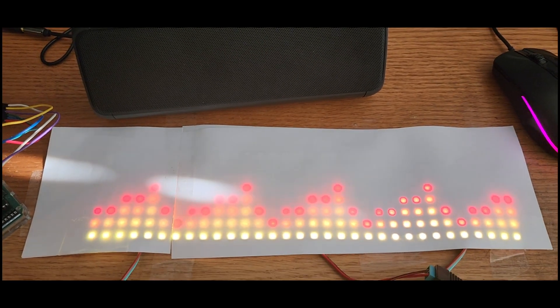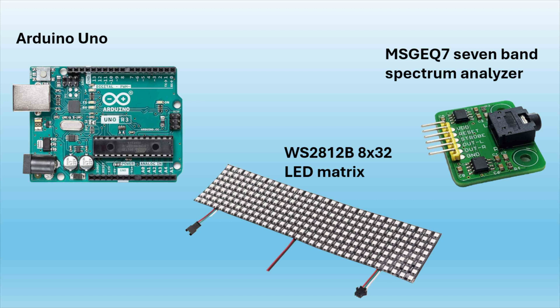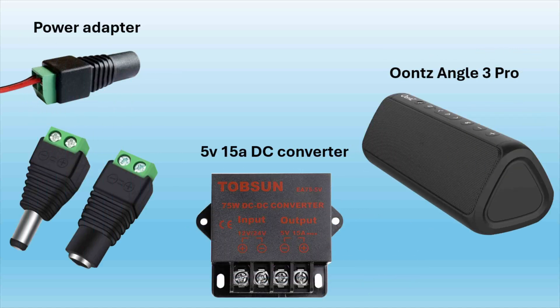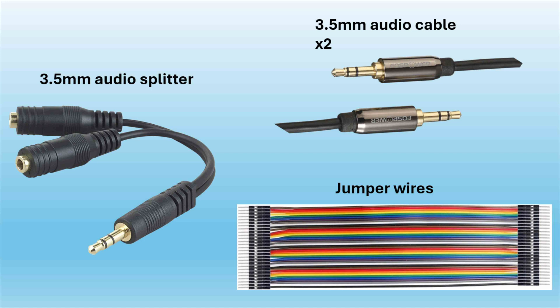Today we're going to create a stunning LED audio visualizer using Arduino, WS2812B LEDs, and the MSGEQ7 breakout board. In this video I'll be using an Arduino Uno, a WS2812B 8x32 LED matrix, the MSGEQ7 breakout board, a power adapter, a 5V 15A DC converter, the Oons Angle 3 Pro Speakers, a 3.5mm audio splitter for the two 3.5mm audio cables, and some jumper wires.